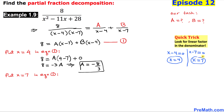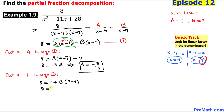Now let's focus on x equal to 7. Put x equal to 7 in equation 1. Wherever x appears, replace it by 7. The term A times x minus 7 becomes A times 7 minus 7, which is 0, so that whole term becomes 0. We are left with 8 equals B times 7 minus 4, which gives us 8 equals 3B. That means B equals 8 over 3.